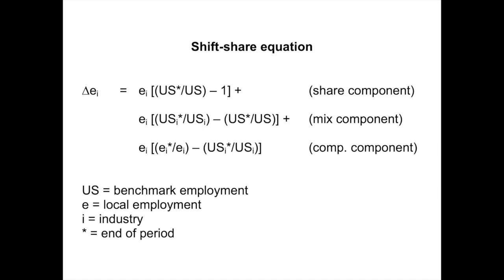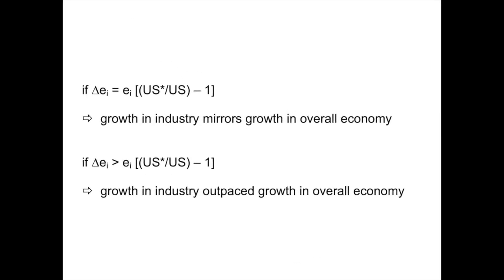The competitive component — the amount of growth or decline not explained by the overall growth of the economy and the growth of the industry in the benchmark economy — is calculated by multiplying the local industry employment at the beginning of the period, E_i, by the growth of industry employment in the local economy (E_i* divided by E_i), and subtracting from that the growth of industry employment in the benchmark economy (U.S._i* divided by U.S._i). We can compare the employment change of the local industry, delta E_i, to the different shift share components — for example, delta E_i compared to the share component, which is E_i multiplied by (U.S.* divided by U.S.) minus one.